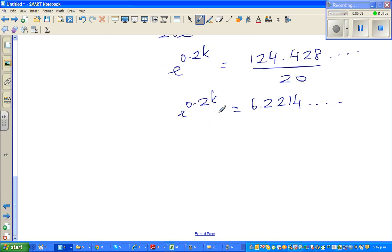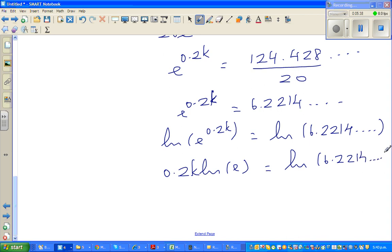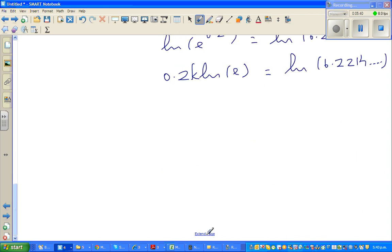So now I have to take a natural log of both sides, so natural log of e to the power 0.2k equals natural log of 6.2214. So using the log rule, this is 0.2k times natural log of e, equals natural log of 6.2214. And natural log of e has a base of e.